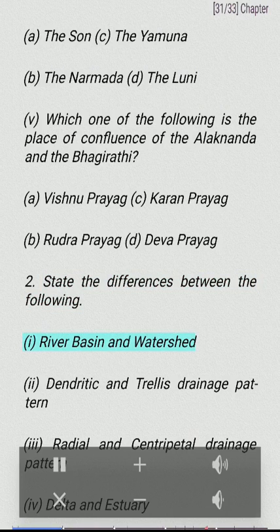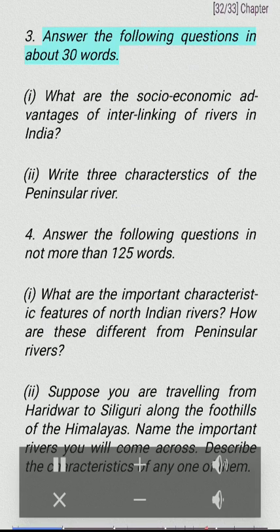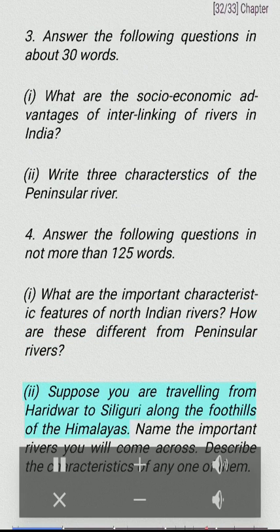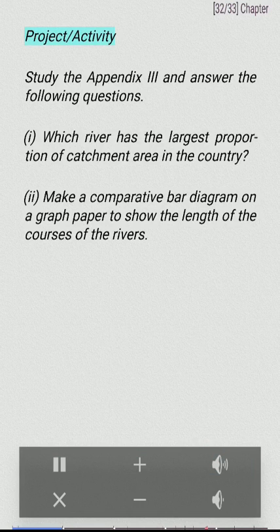2. State the differences between the following: (i) river basin and watershed, (ii) dendritic and trellis drainage pattern, (iii) radial and centripetal drainage pattern, (iv) delta and estuary. 3. Answer the following questions in about 30 words: (i) What are the socio-economic advantages of interlinking of rivers in India? (ii) Write three characteristics of the peninsular rivers. 4. Answer the following questions in not more than 125 words: (i) What are the important characteristic features of north Indian rivers? How are these different from peninsular rivers? (ii) Suppose you are traveling from Haridwar to Siliguri along the foothills of the Himalayas — name the important rivers you will come across and describe the characteristics of any one of them. Project activity: Study Appendix 3 and answer the questions — which river has the largest catchment?